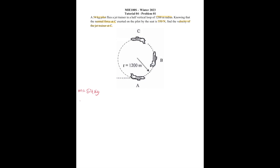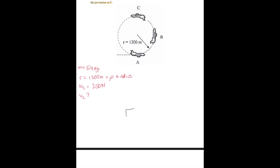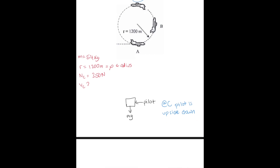We know that the mass is 54 kg. We also know the radius, and we know the normal force at C. We want to find our velocity at C. Starting with our free body diagram, if we say that this is the pilot, then we know that gravity is going to act on his mass. And because at C the pilot is actually upside down, NC is going to be acting downwards as well, because it's the normal force of the seat on the pilot.